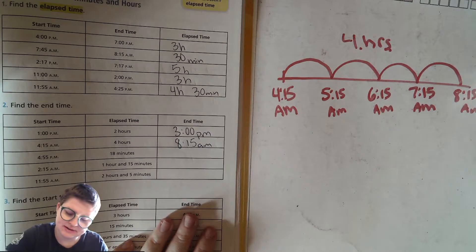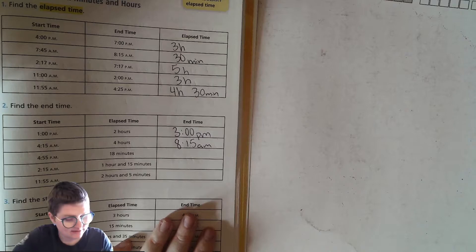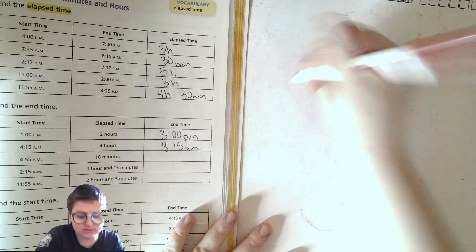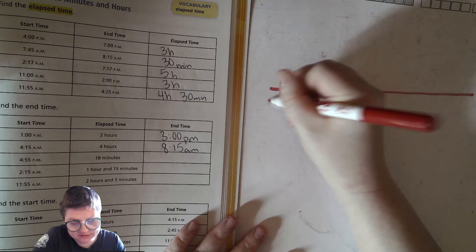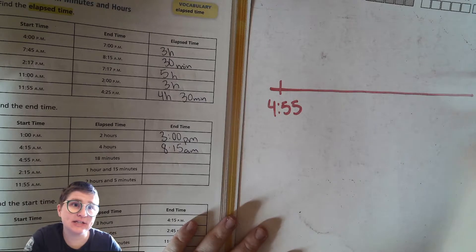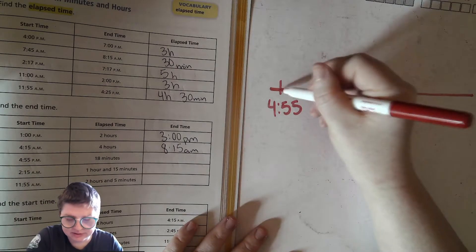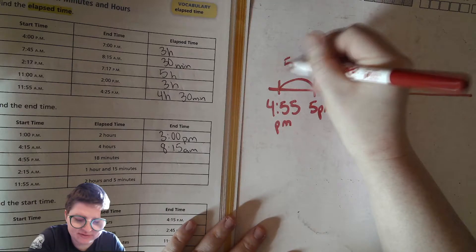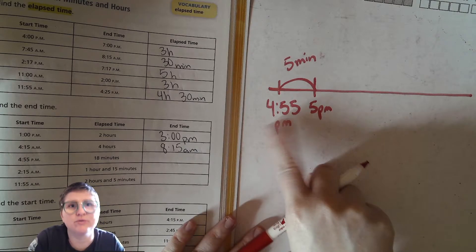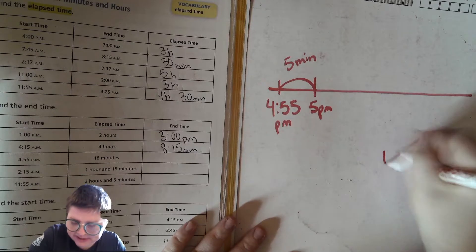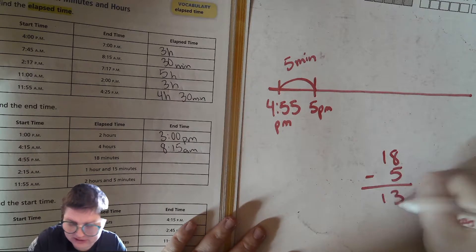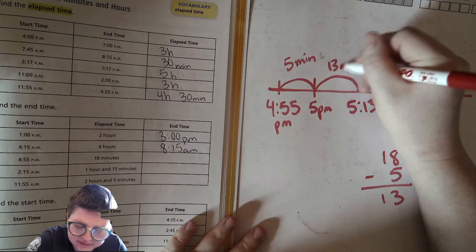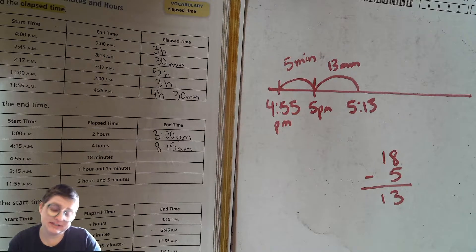Next, starting at 4:55 PM going forward 18 minutes. This is close to the next hour, so we have to think it through. How many minutes until the next hour? Just a quick hop to 5 PM — that's five minutes, because you can think of it as 4:60 equals 5 PM. We've used five of those 18 minutes, so 13 minutes remain. What's 13 minutes after 5 PM? That's 5:13. So we've moved 18 minutes forward to 5:13.